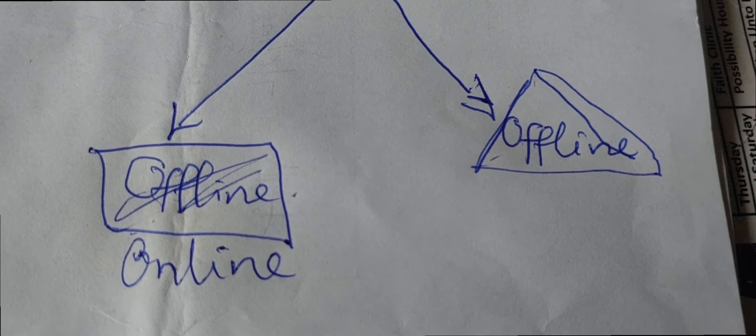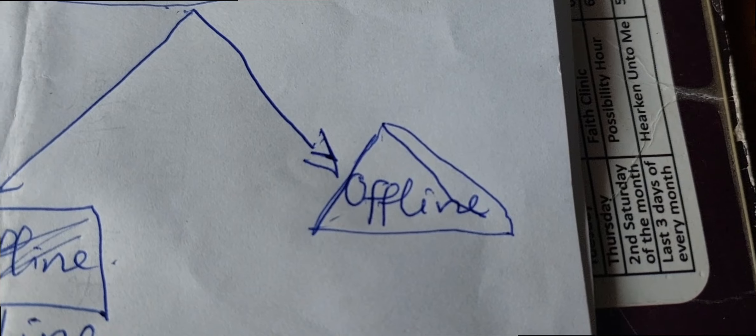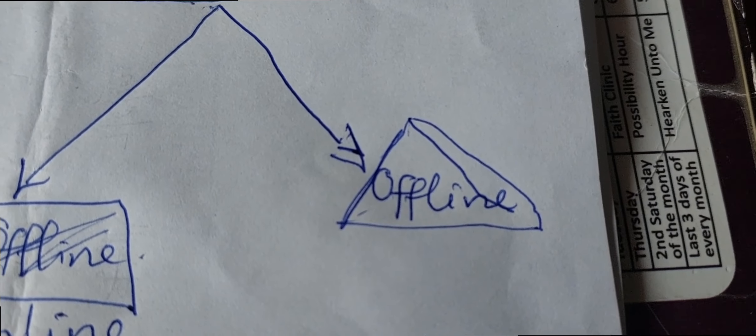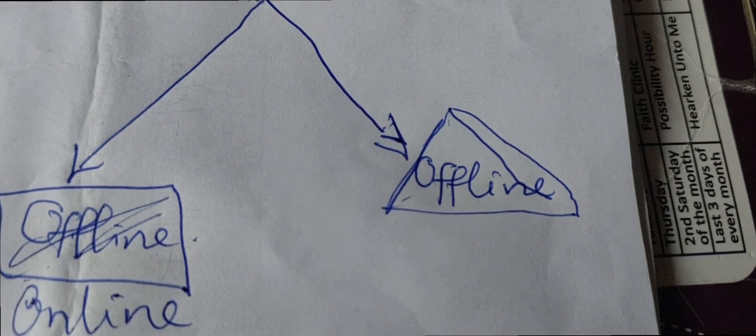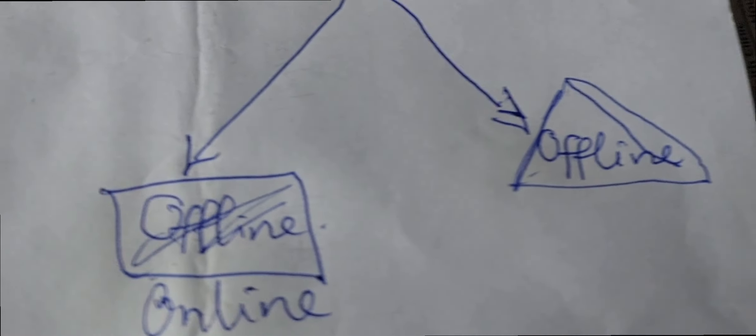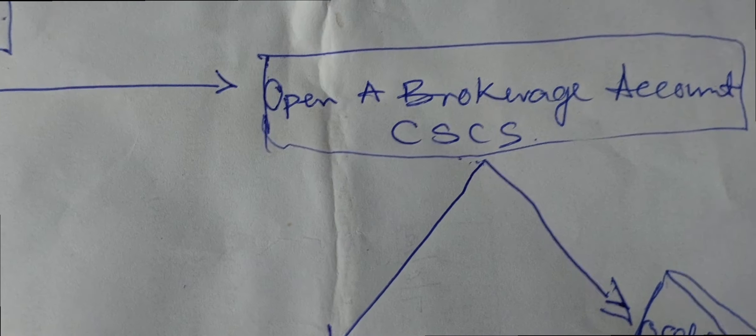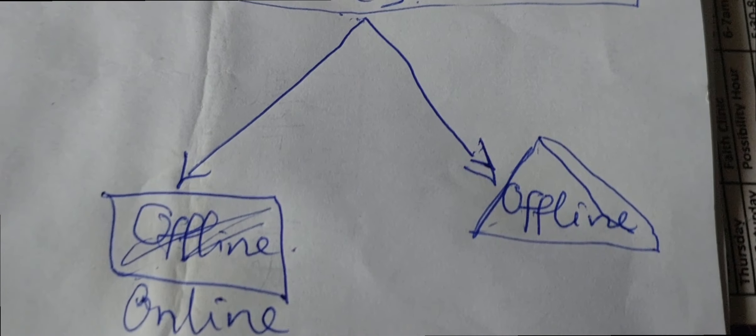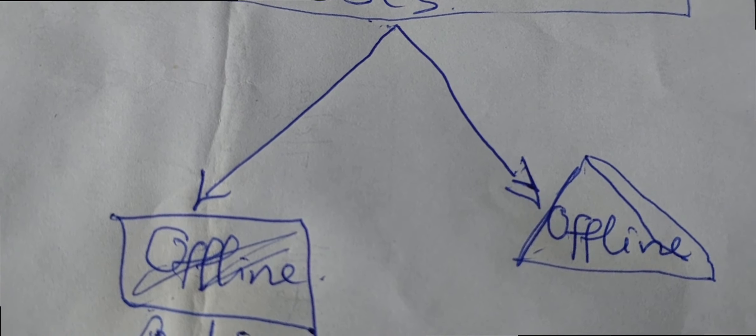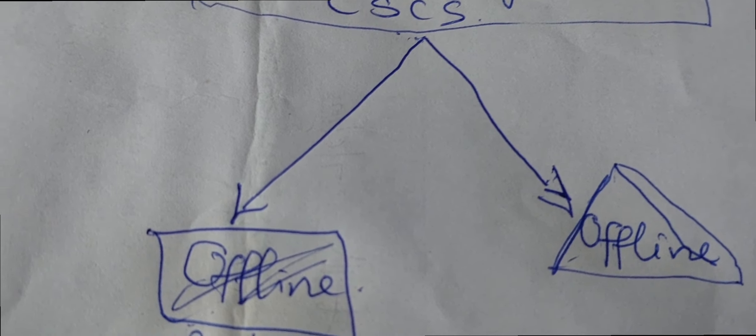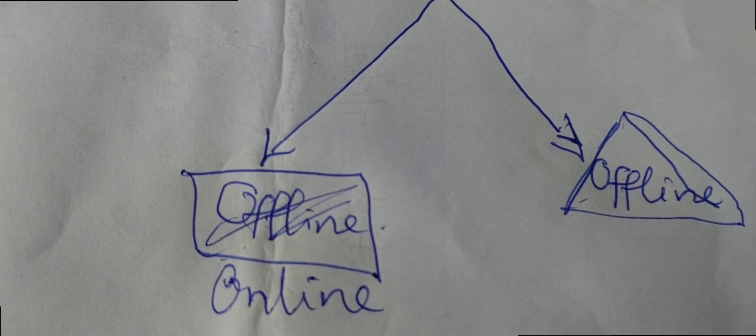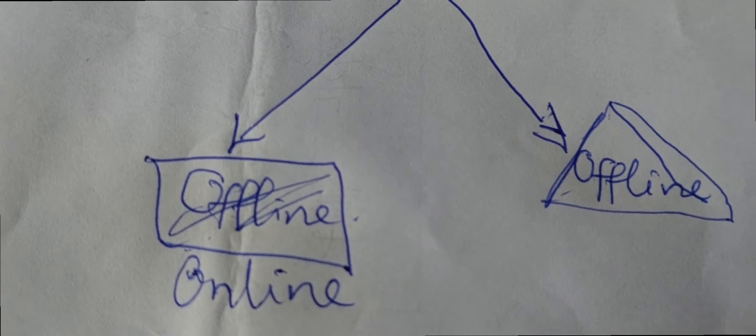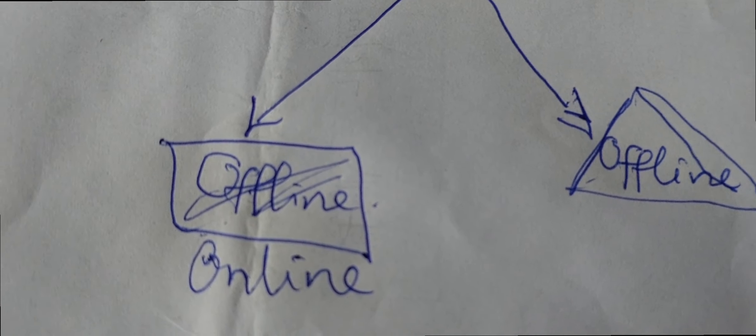There is another one which is the offline. Offline in the sense that you need to find a broker, a certified broker that is licensed by the SEC that can open a brokerage account. This one they are going to give you a form to fill, you fill the form, then they open it for you.